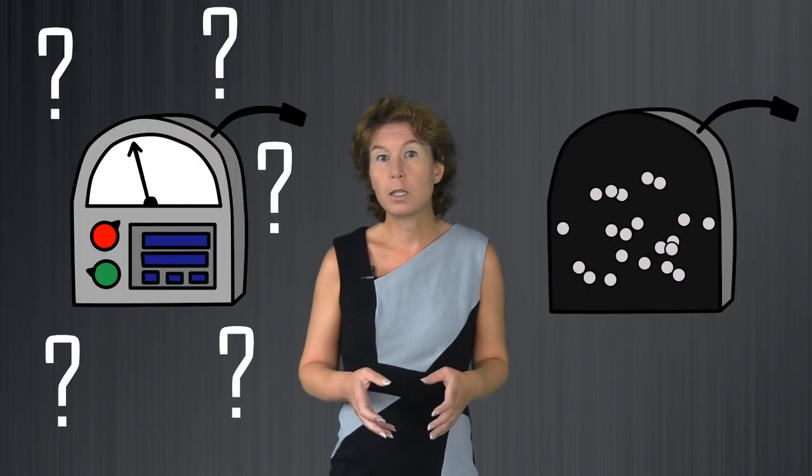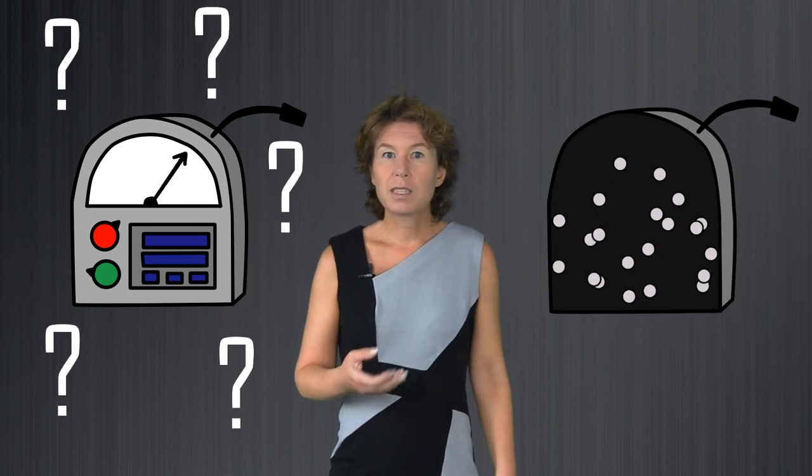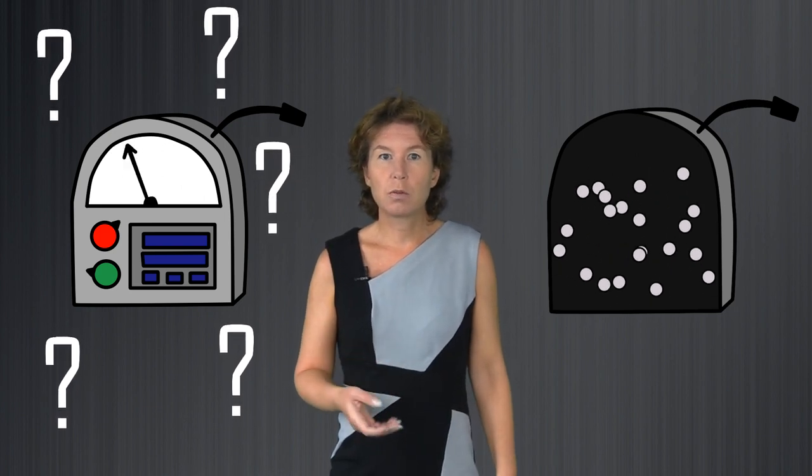This does not solve the measurement problem, because after measurement you still have to update the probability of what you have observed to 100%. Decoherence does not tell you to do that. The trouble with the measurement postulate is that the behavior of a large thing, like a detector, should follow from the behavior of the small things that it is made up of. But this is not the case, so that's the issue.